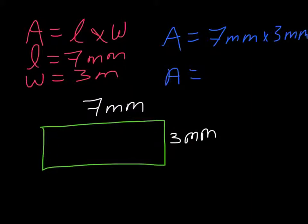My area equals 7 times 3, which is 21. Millimeters times millimeters, which means you need to do millimeters squared. Why do we do millimeters squared?